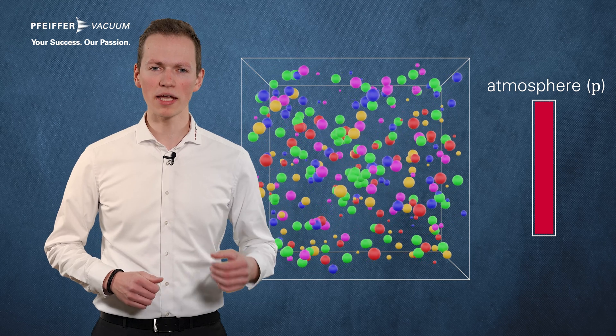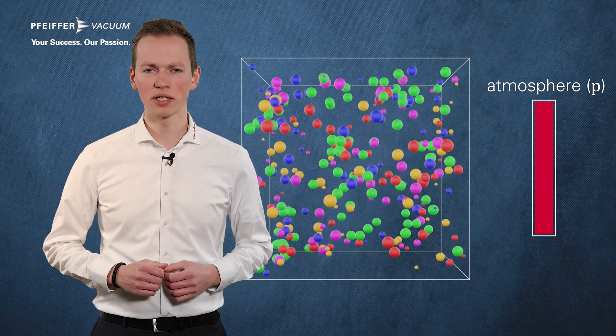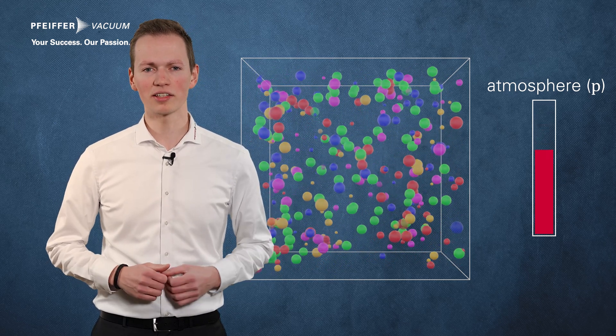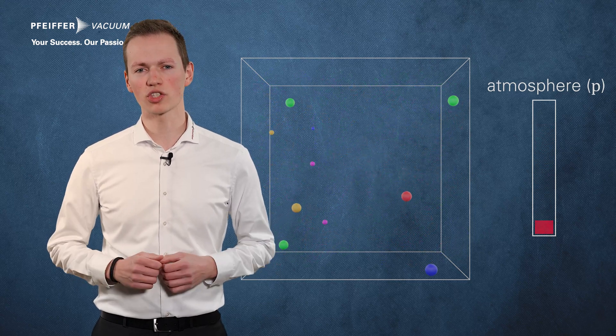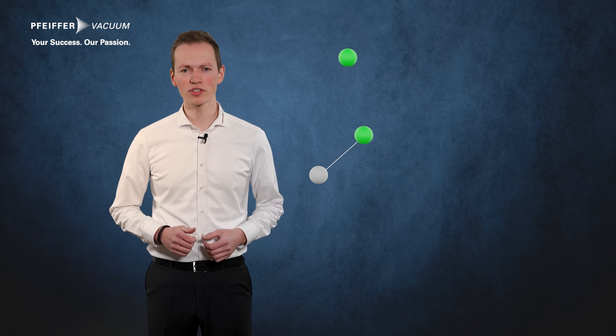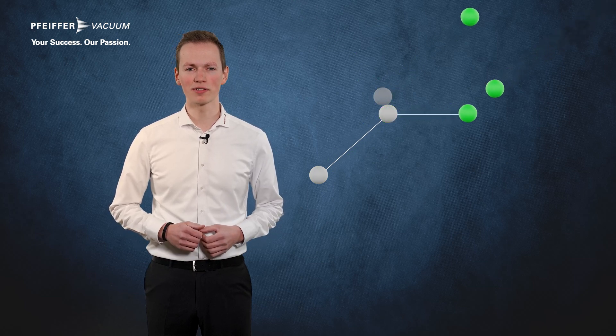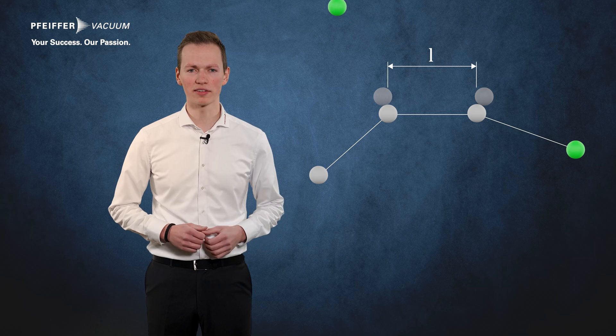As mentioned in one of our last videos, the particles of a gas move at high velocities. At atmospheric pressure, many collisions occur between the particles. Note that the number of collisions decreases with decreasing pressure. Basically, the mean free path is the average distance that a particle can travel between two successive collisions with other particles.